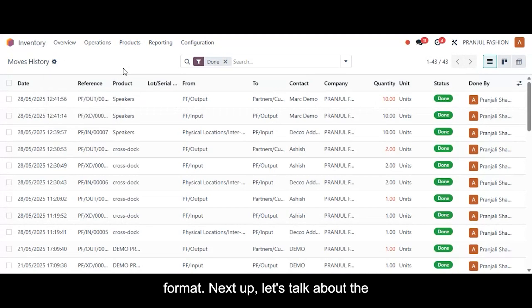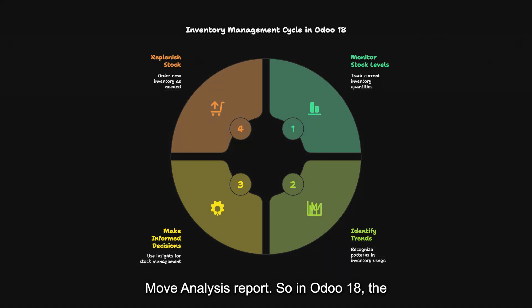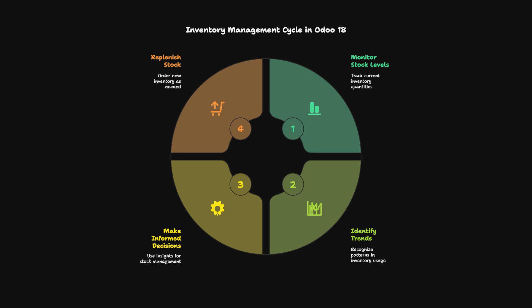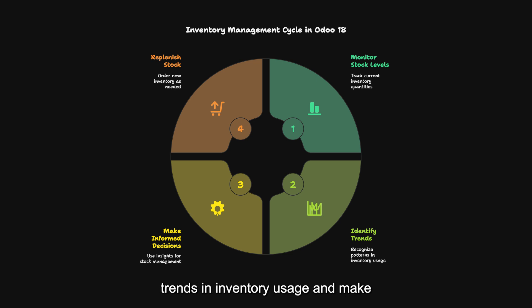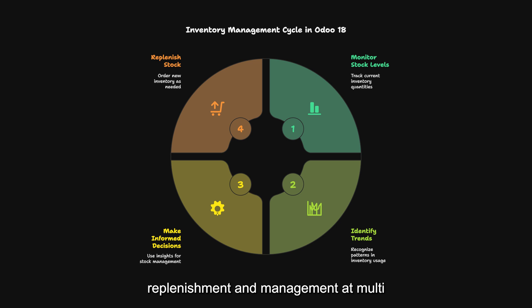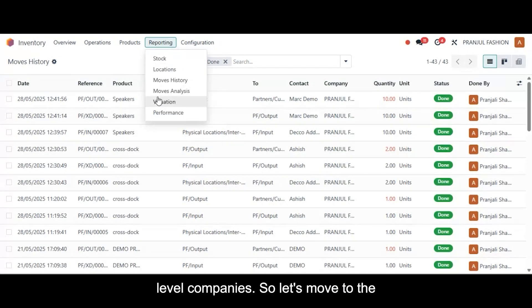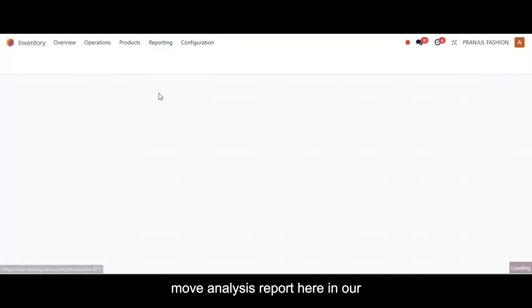Next, let's talk about the moves analysis report. In Odoo 18, the moves analysis report is a crucial tool for businesses to monitor the flow of products in and out of their inventory. This feature allows users to gain insights into stock levels, identify trends in inventory usage, and make informed decisions regarding stock replenishment and management at multi-level companies.